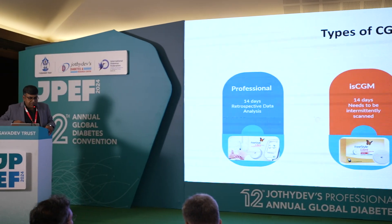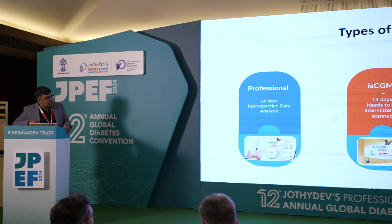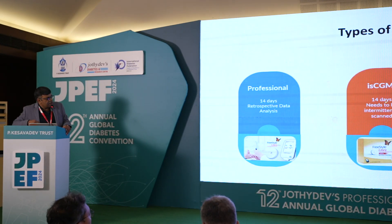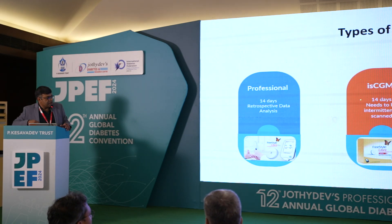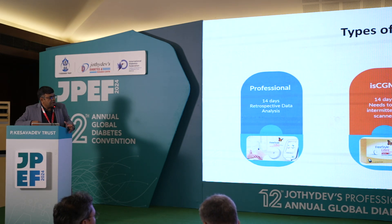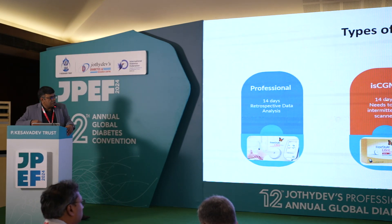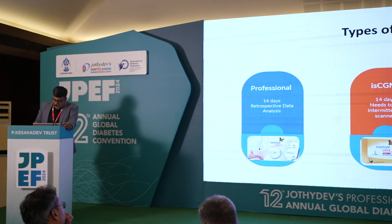Recently we have the intermittently scanned CGM, which is Libre, also available in our country. This works for 14 days and functions continuously, but you need to scan intermittently. At least every 8 hours you should scan the sensor with a reader — if you don't scan within every 8 hours, the data will be lost, which is why it's called intermittently scanned CGM. You can scan to check sugar levels anytime, but scanning is required.